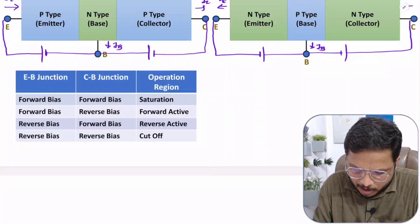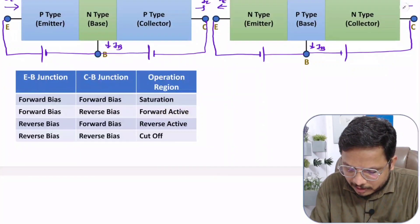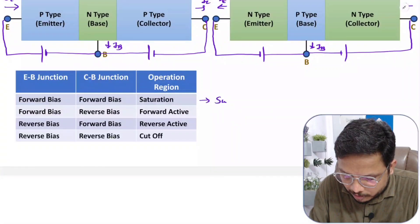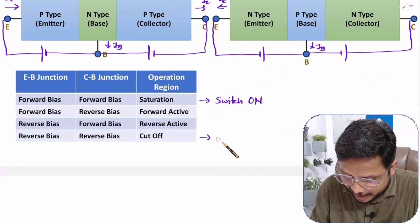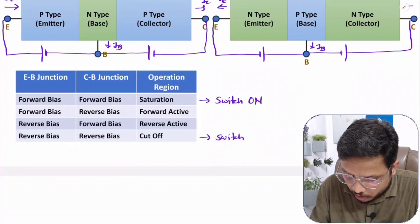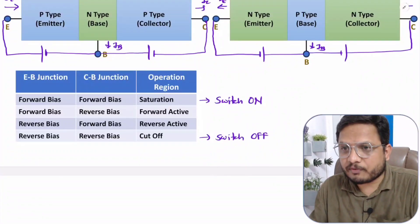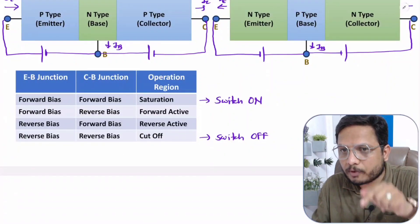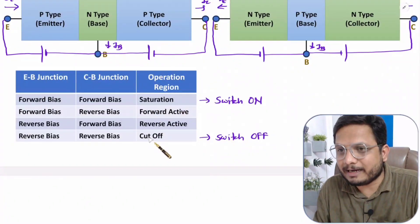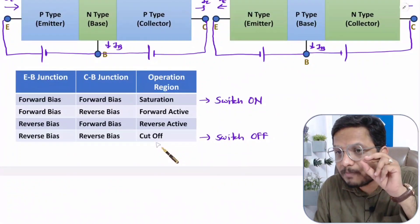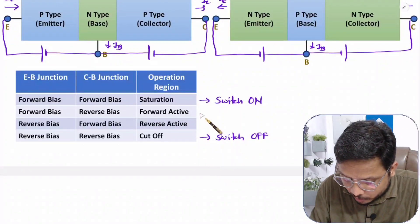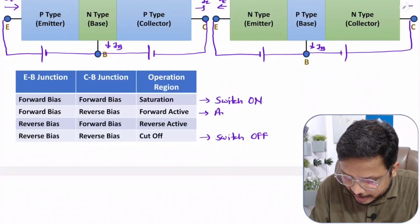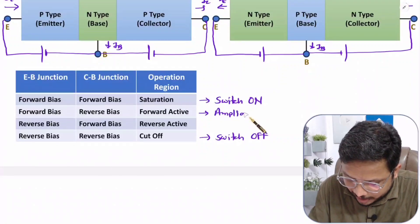If you talk about BJT in saturation, we use it as switch on. In cutoff, we use it as switch off. So if you want to use BJT as a switch on and switch off, you can use it in saturation and cutoff region. But if you want to use BJT as an amplifier, you can use it in forward active. In forward active, we use it as amplifier.